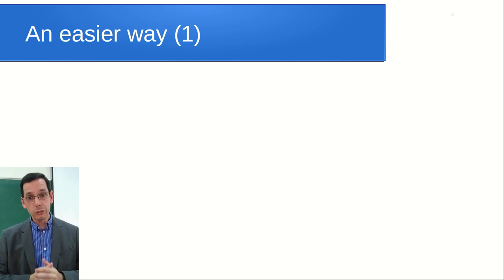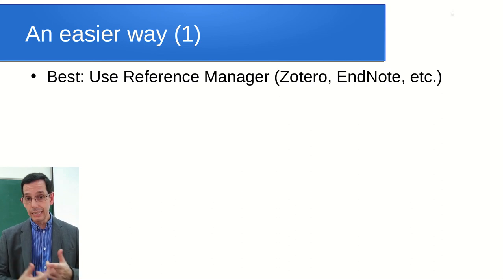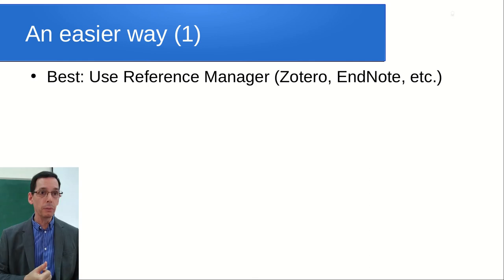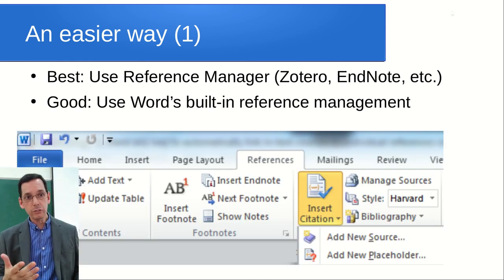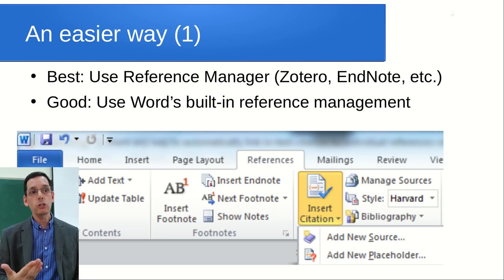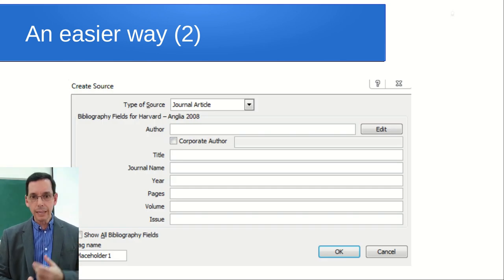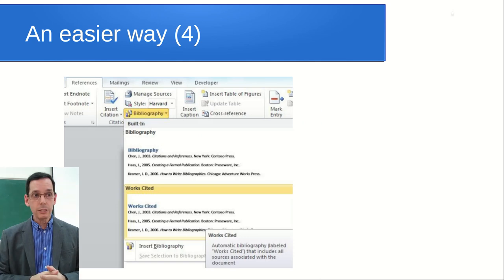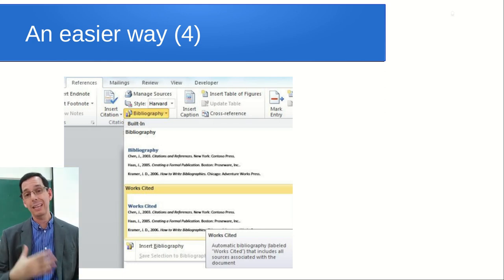If you're going to do a lot of writing - and in university you are - you probably want to look into using a reference manager. I use Zotero, which is free and open source software that runs on Linux, Mac, Windows, etc. There's also a paid option called EndNote, which is liked by many people. If you don't want to use either of those, you can use Word's built-in reference management system: go to the References tab, go to Insert Citation, and add your citation. Add the type of source, the author, and all the details. Make sure you put in the family name and first name of the author correctly so Word can follow all the rules. Then when you want your Works Cited page, go to Bibliography and generate it from Word - it does all the work for you.